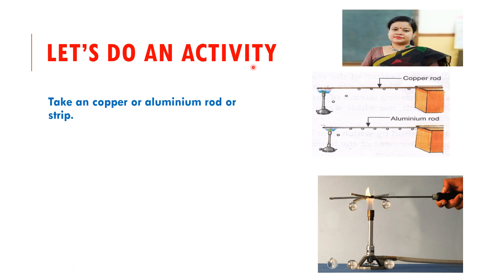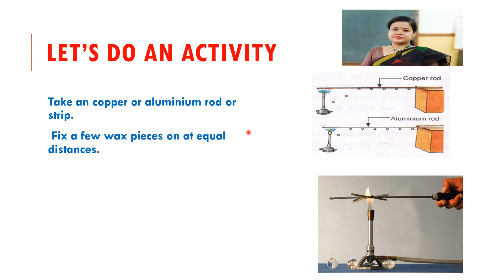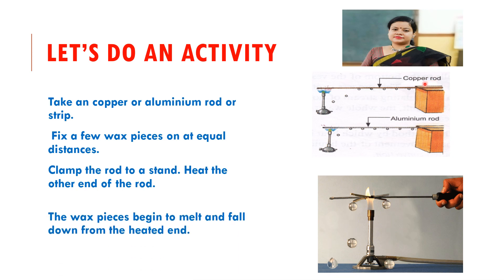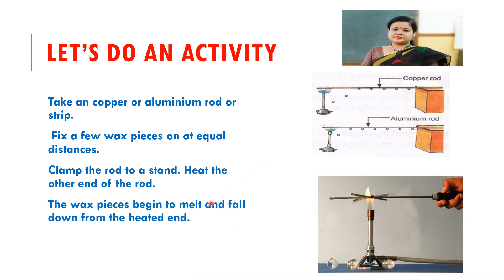Let's do an activity. Take a copper or aluminium rod, fix a few wax pieces at equal distance, and clamp the rod to a stand. Once we start heating, the wax pieces begin to melt and fall down one by one from the heated end. This happens because heat conduction starts from the heated end and slowly moves toward the other end, just as the molecules transfer energy during conduction.